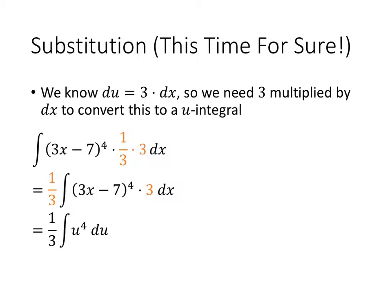Now we do our conversion. So 3x minus 7, that's u. So 3x minus 7 to the 4th, that's u to the 4th. 3dx, we figured out earlier that that's du. So that gives us our integral of u to the 4th du.